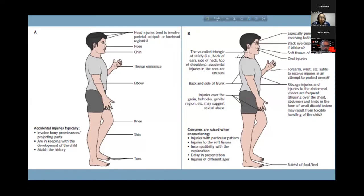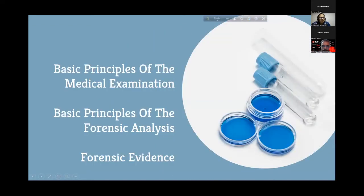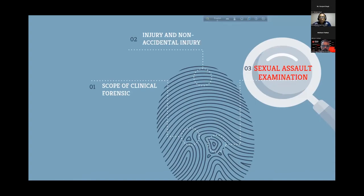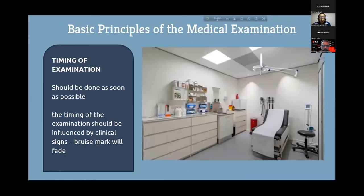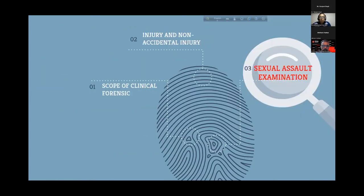Accidental injury can occur anywhere from head to toe, but non-accidental injury, although similar, tends to present in specific areas — particularly punch marks, soft tissue injuries on the cheek, oral injuries, and black eyes. These are common in cases of non-accidental injury, and we must take the patient through the proper process.